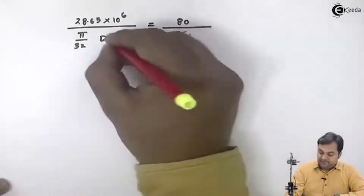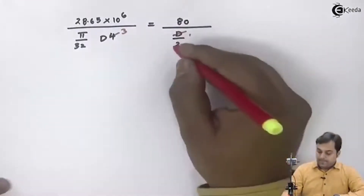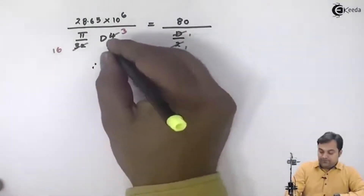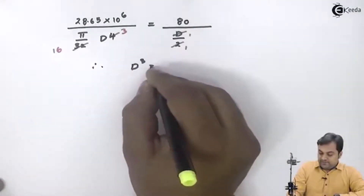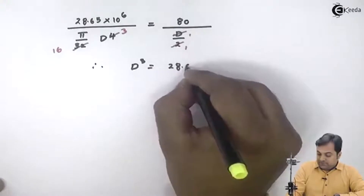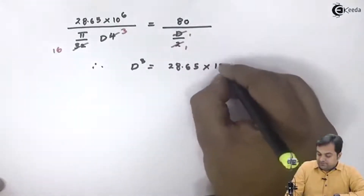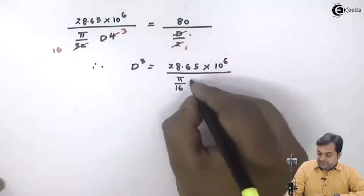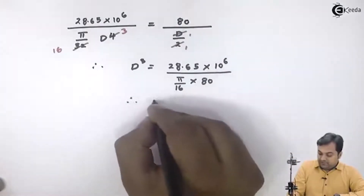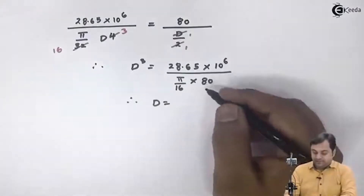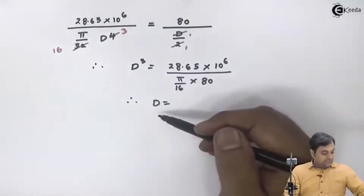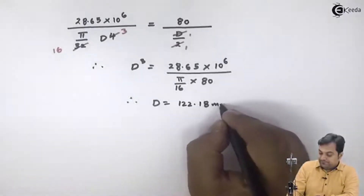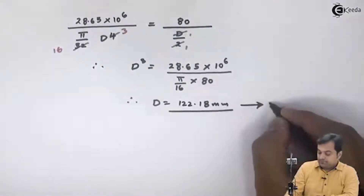D from the left-hand and right-hand sides gets cancelled, leaving D cubed. Therefore D³ = 28.65×10⁶ / (π/16 × 80). Calculating carefully and taking the cube root, I get D = 122.18 mm. This is answer number one — the diameter of the solid shaft.